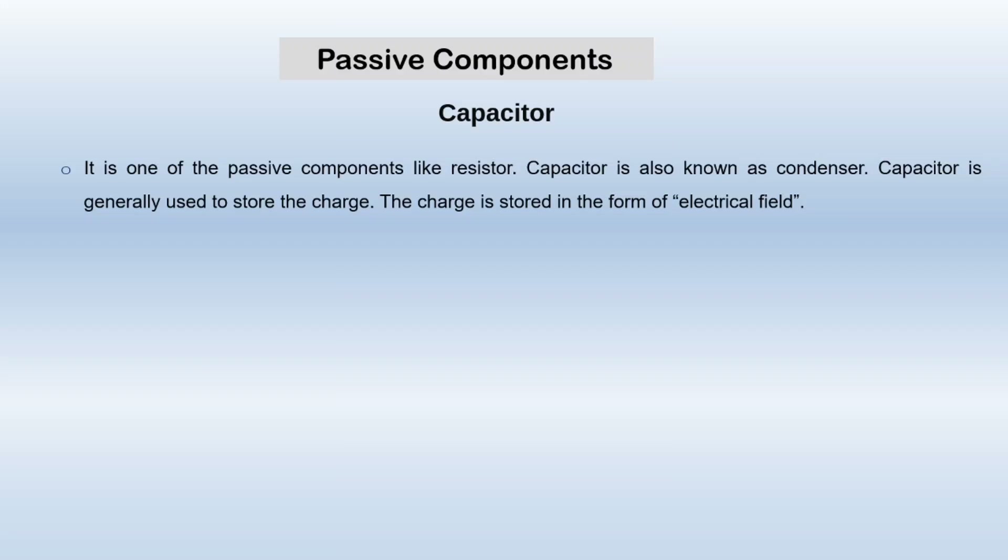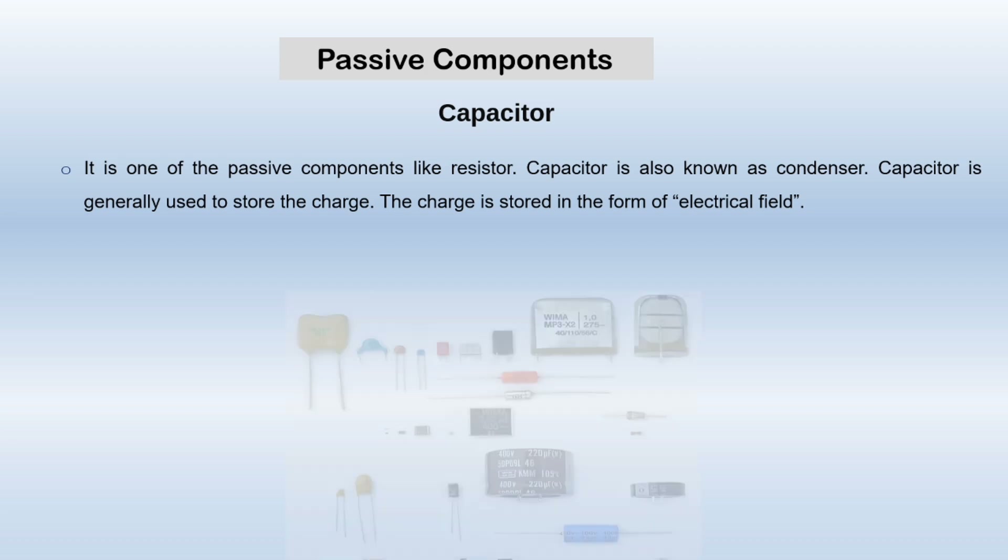A capacitor is another passive component like a resistor and it is also known as a condenser. It is generally used to store charge in an electronic circuit, and the charge is stored in the form of electrical field. The capacitance of a capacitor is measured in farads.